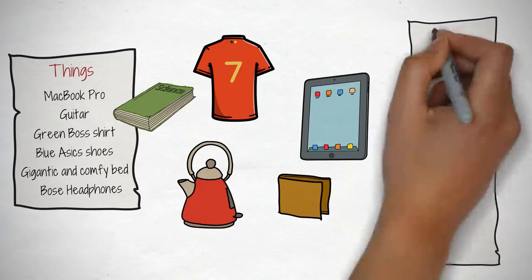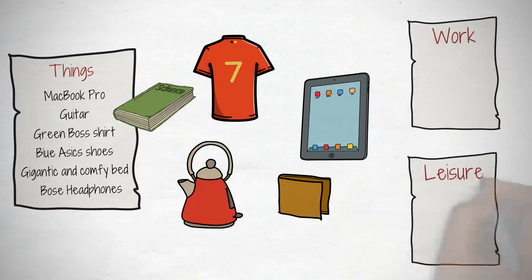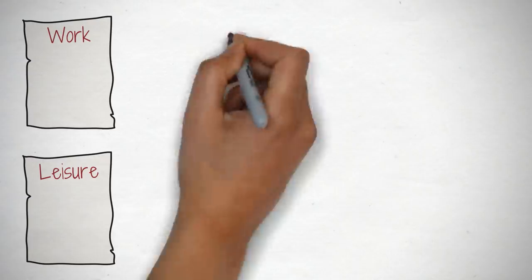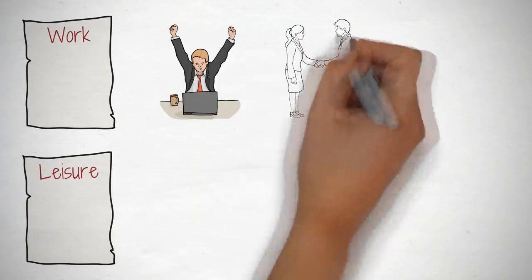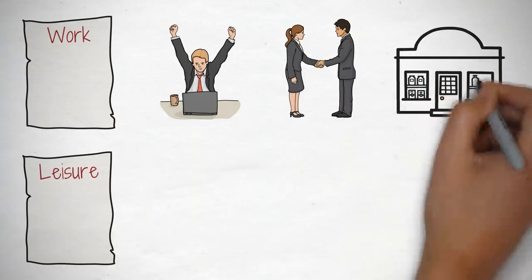Write down your favorites. Then, repeat the exercise for work and leisure. In work, list down everything you love about what you do. These can be tasks, places, colleagues, things, location, etc.